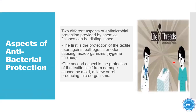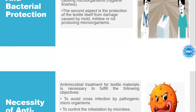Two different aspects for the antimicrobial protection provided by chemical finishes can be distinguished. The first is the protection of the textile against pathogenic and odor-causing organisms for hygiene finishes. The second aspect is the protection of the textile itself from damages caused by mold, mildew, or rot-producing microorganisms.